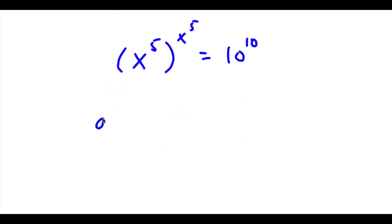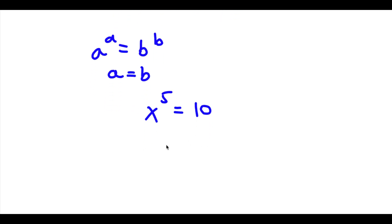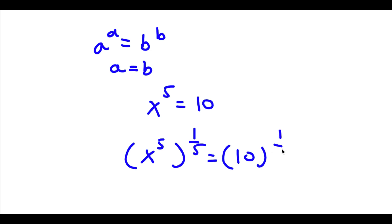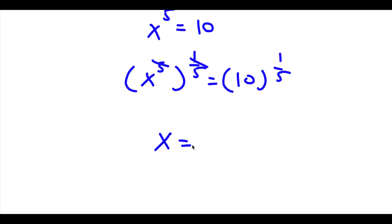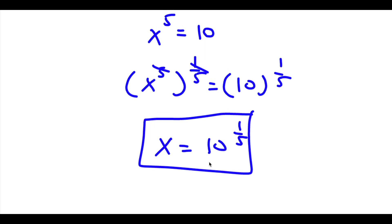If I have something in the form a to the power of a is equal to b to the power of b, then a is equal to b. So in this case, x to the power of 5 is equal to 10. To solve this, I'm going to take the power of 1 over 5 on both sides, so these two will cancel out and I'll be left with x is equal to 10 to the power of 1 over 5. So that is our answer.